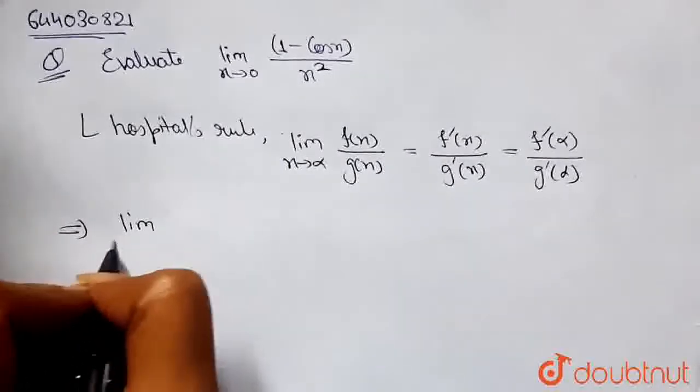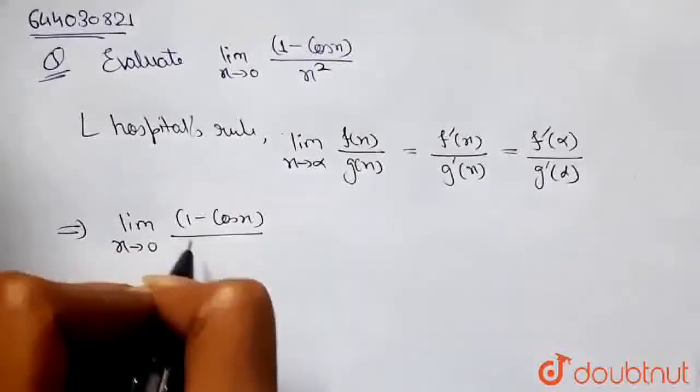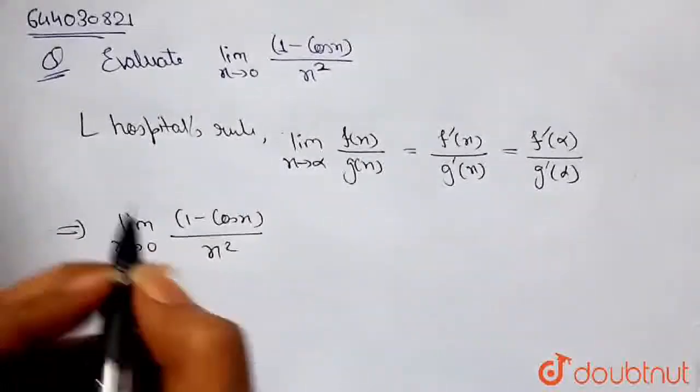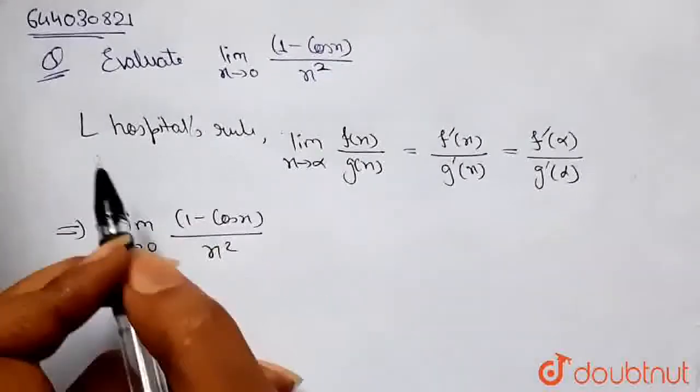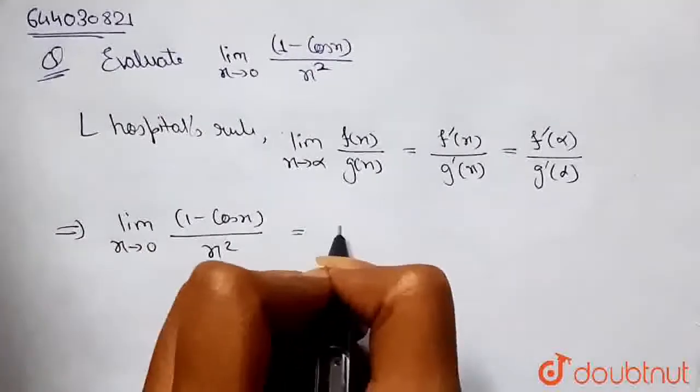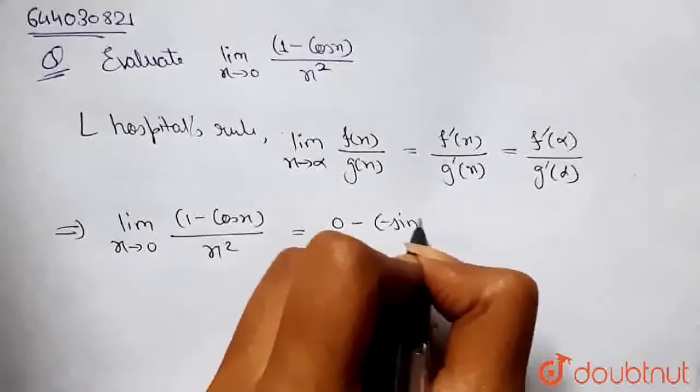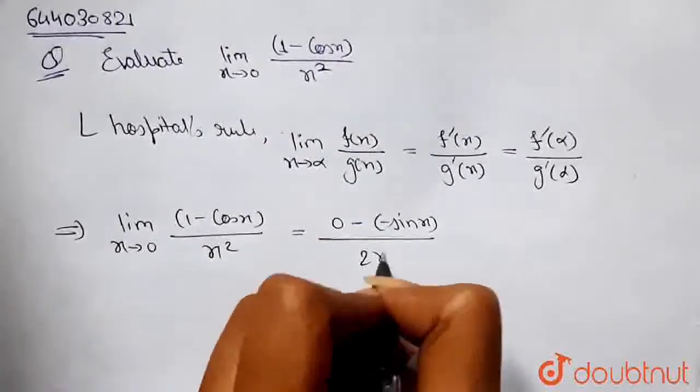We have limit as x tends to 0 of (1 - cos x) divided by x squared. Using L'Hospital's rule for the first time, this will become the differentiation of the numerator, that is 0 - (-sin x), divided by 2x.